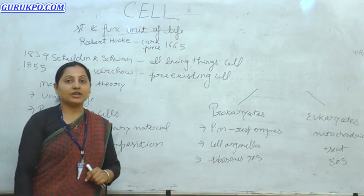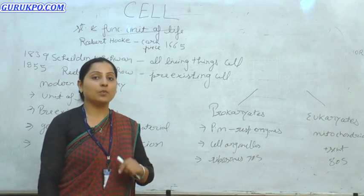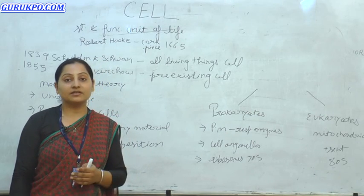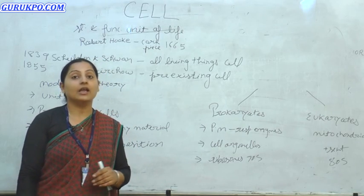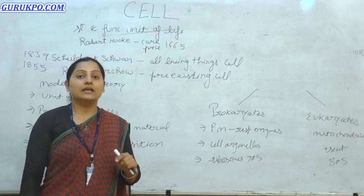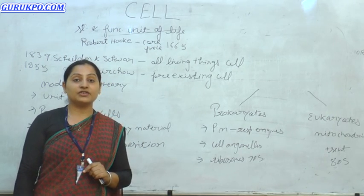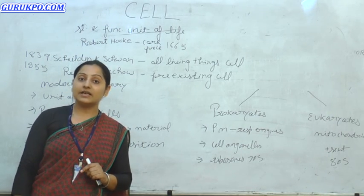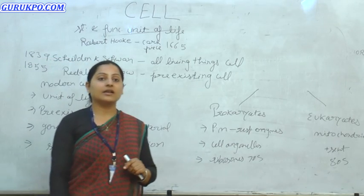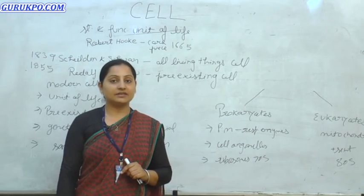The third point concerns the protein synthesis machinery. Both cell types synthesize proteins and have their own machinery. In prokaryotic cells, the ribosomes have a sedimentation coefficient of 70S. In eukaryotic cells, the ribosomes are of the 80S type.